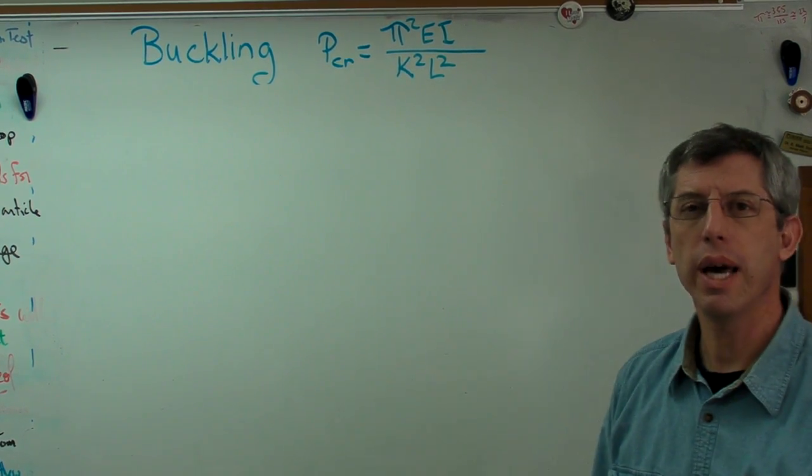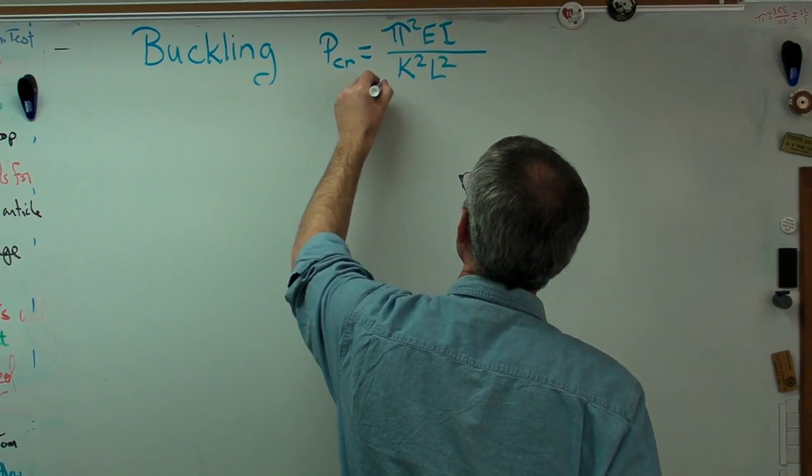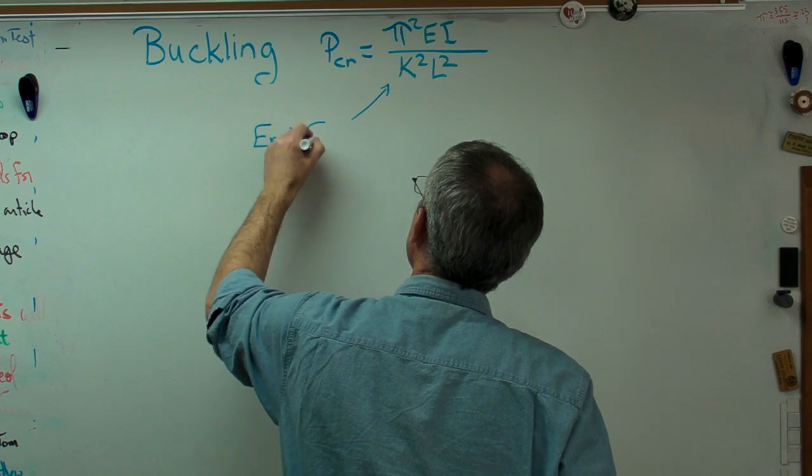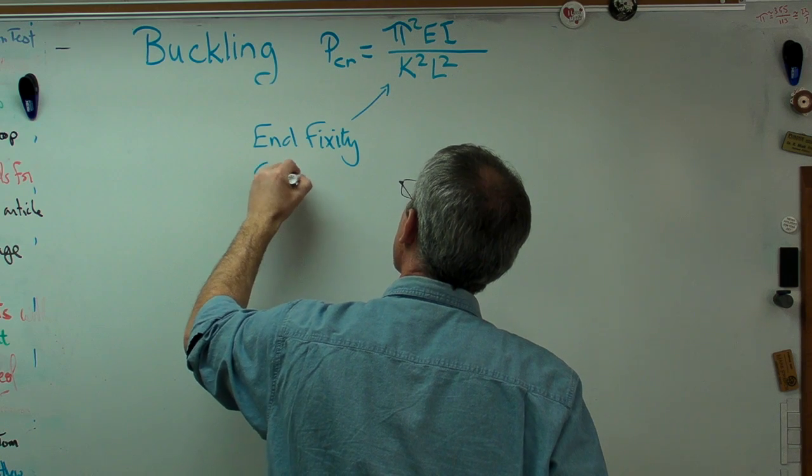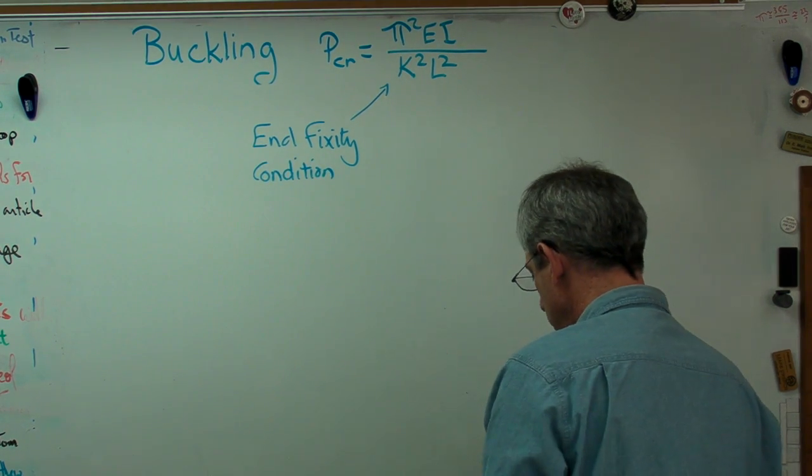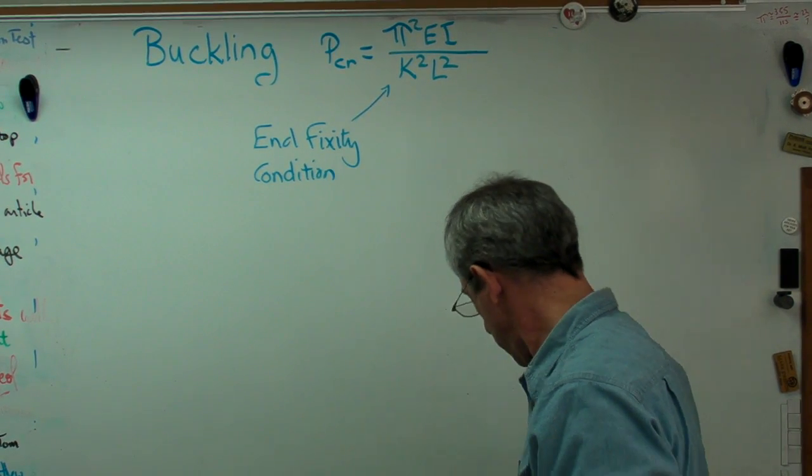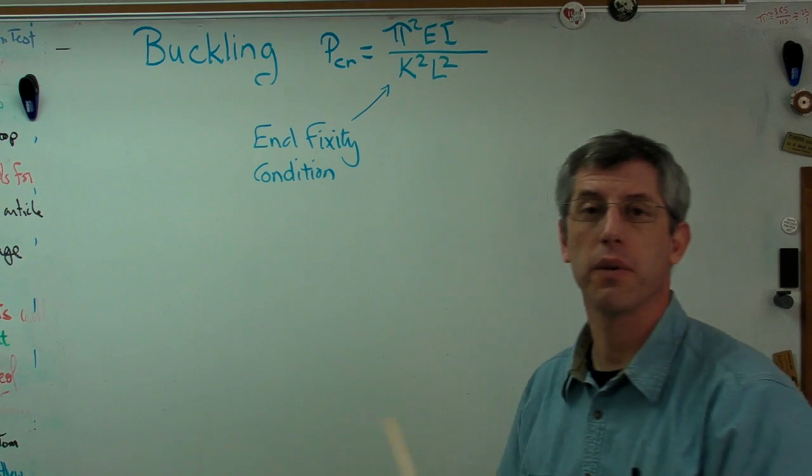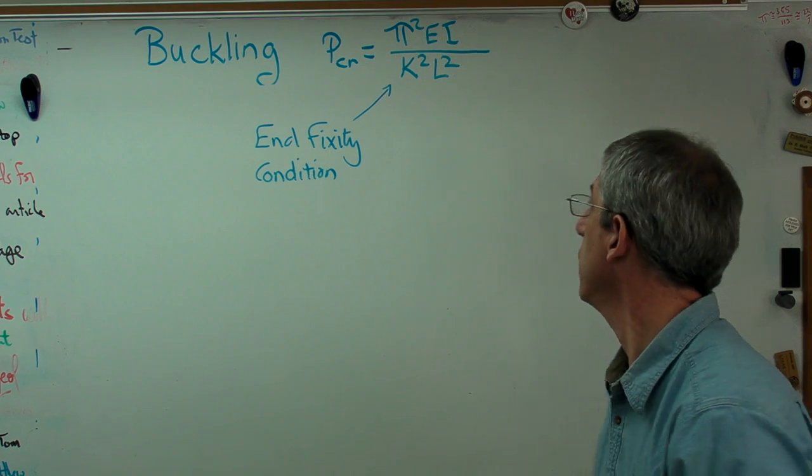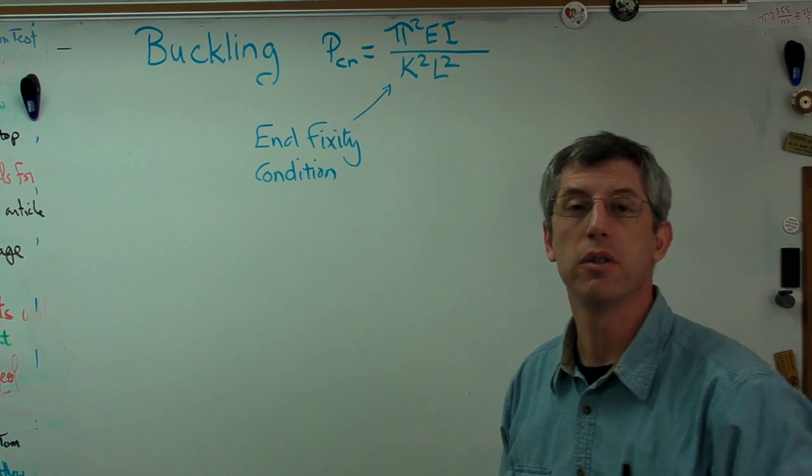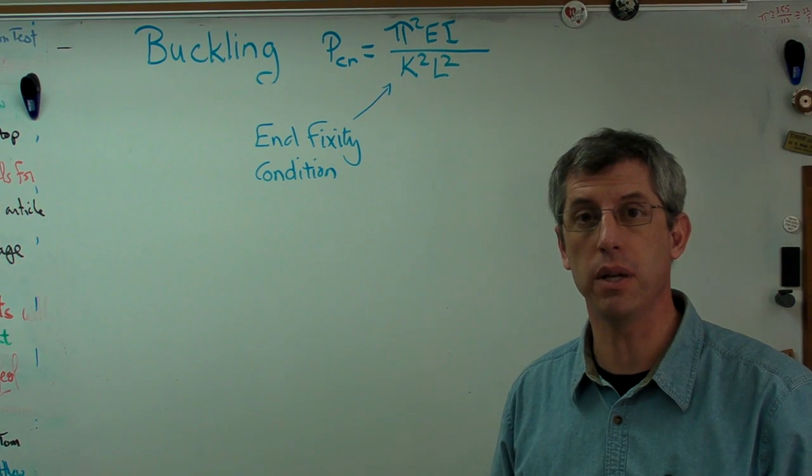So what's k? Well, k is something called an end fixity condition. Not the name I would give it, but that's what it's called. And it's essentially a way of allowing a single expression to be useful in more than one condition. Euler decided that rather than derive separate buckling equations for different end conditions, it was more convenient to make an effective length so that all columns in buckling were compared to a pinned-pinned column.